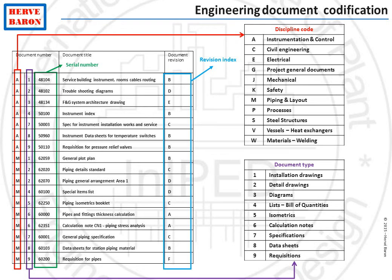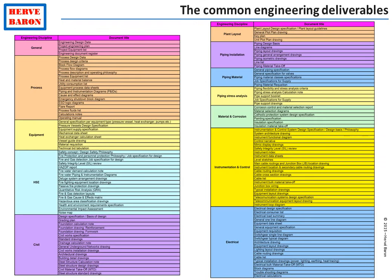Even though there are thousands of documents issued on any typical-size project, these documents are only of a few types. For example, piping issues general arrangement drawings for each of the plant areas — so there might be 300 of them, but they are all of the same type: piping general arrangement drawing. In this course, in the different modules, we will have a look at all the common engineering deliverables issued by each discipline. So at the end of this session, you will be familiar with all the drawings and specifications.